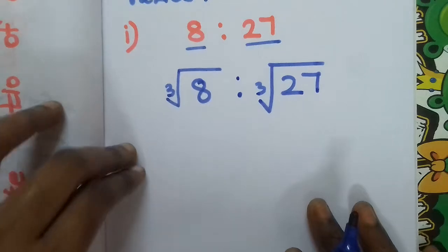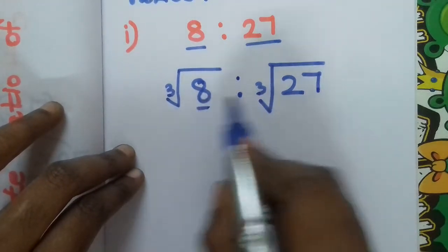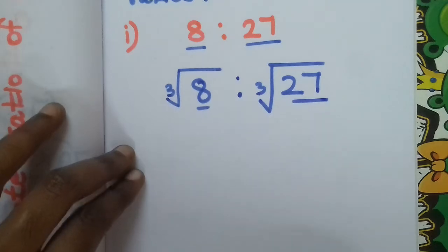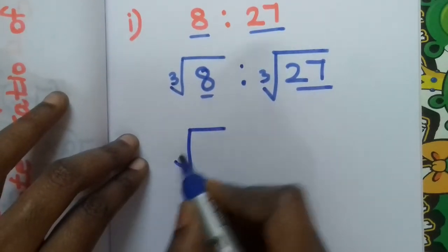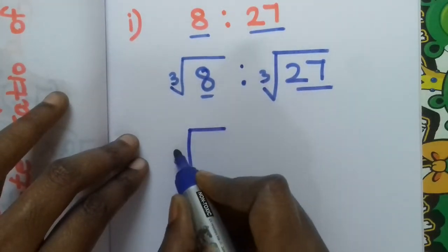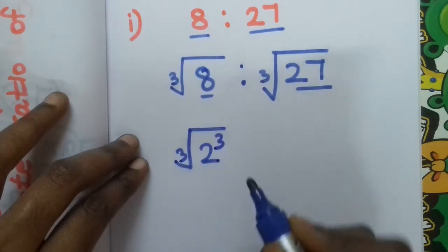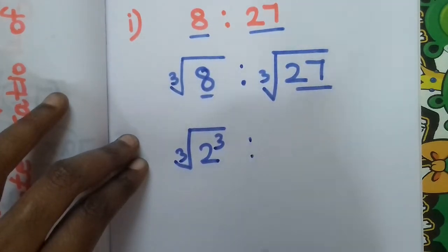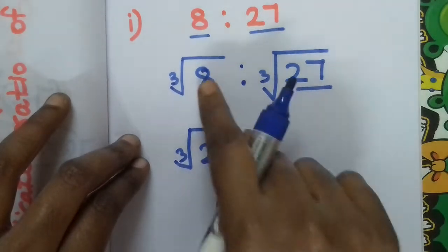If you simplify this, you have the antecedent and consequent inside, and you need to convert them to cube form. How do you get 8? The cube root of 8 — 8 is 2 cubed, because 2 multiplied by 2 multiplied by 2, that is 2 multiplied 3 times, gives you 8.